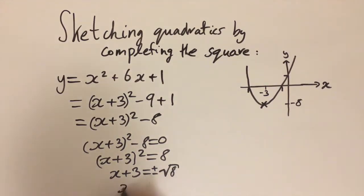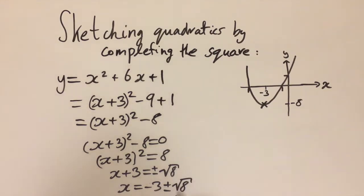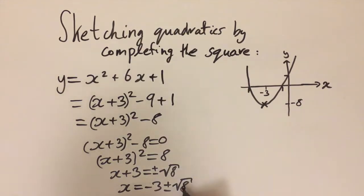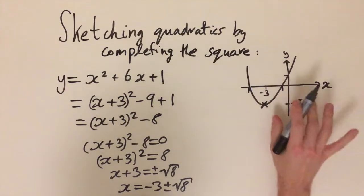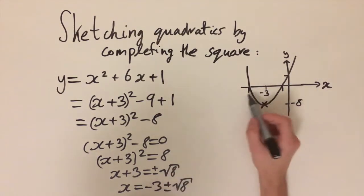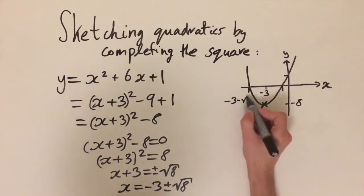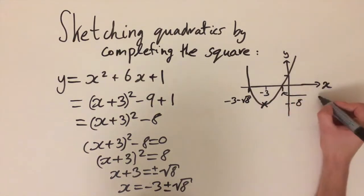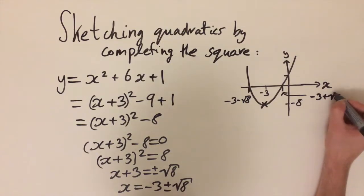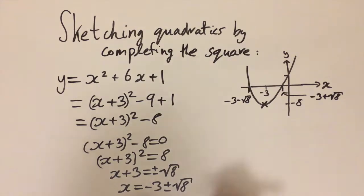The last step is to move the 3 over, giving x = −3 ± √8. Note that √8 is less than √9 = 3, so we have −3 plus or minus a number smaller than 3, which means both x-intercepts are negative. So the shape of the graph is correct. The smaller intercept is −3 − √8 and the other is −3 + √8, which can also be written as −3 + 2√2.